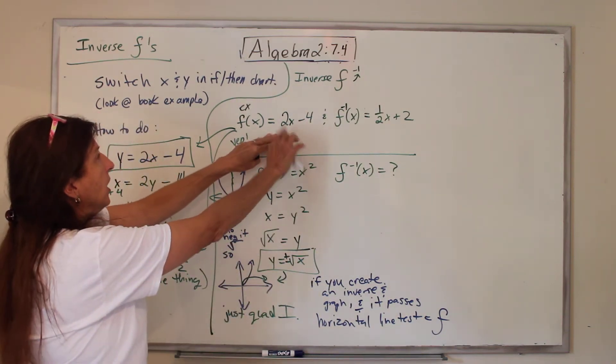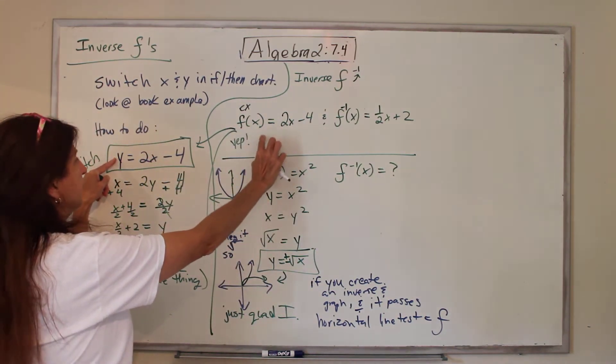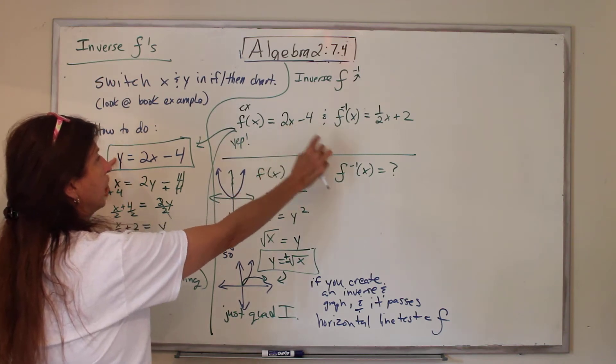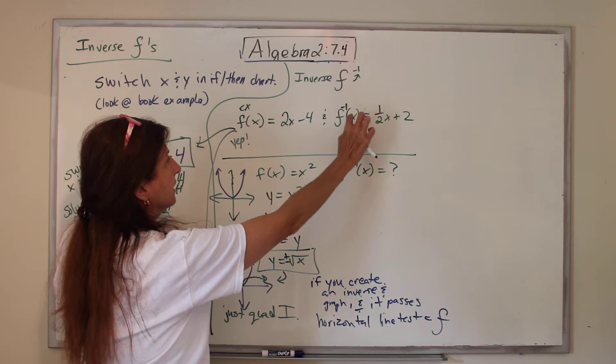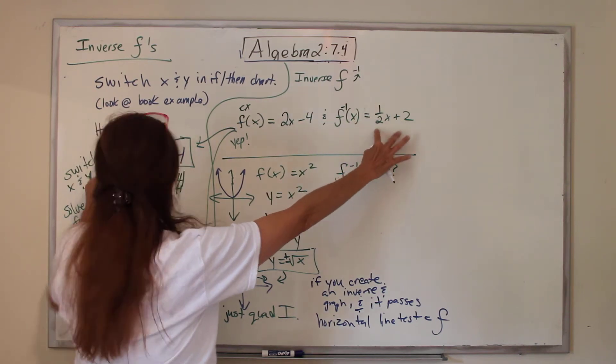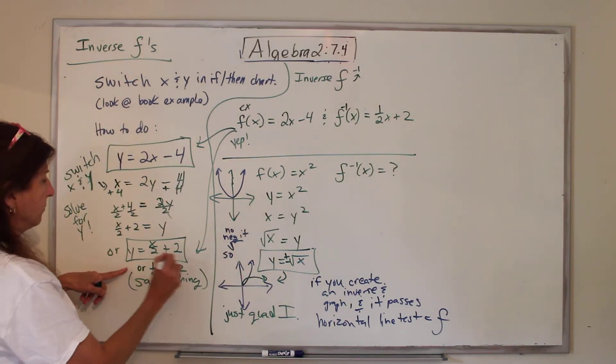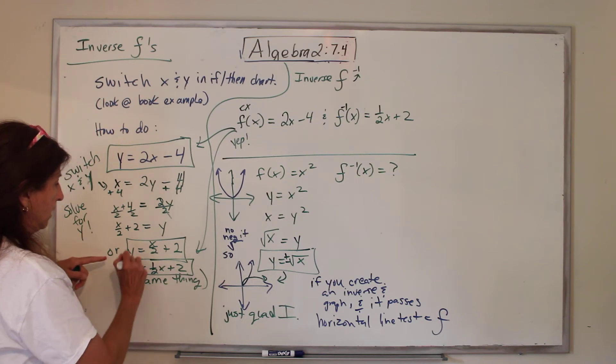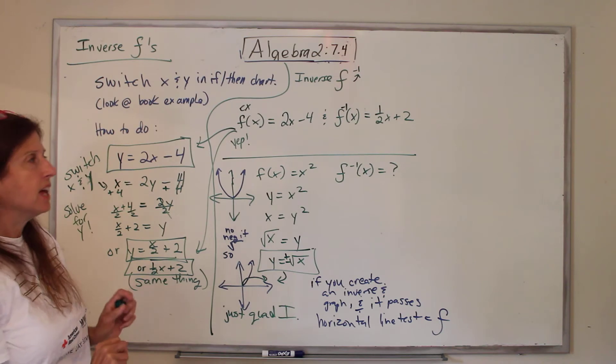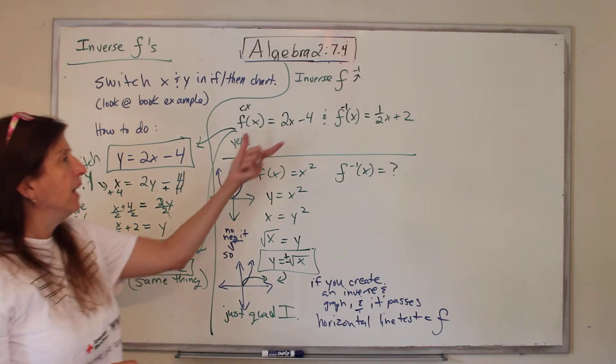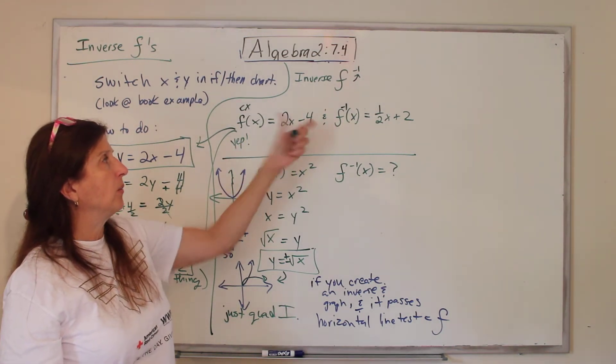Sometimes the inverse function is written with a negative 1. So here, this is this one: F(x) equals 2X minus 4. And then this is the inverse. The inverse function of X equals, down here they wrote it this way, 1/2 X plus 2. Yep, they are inverses.